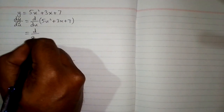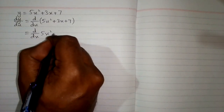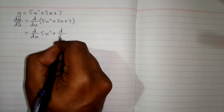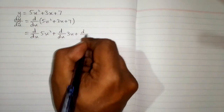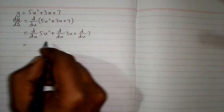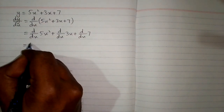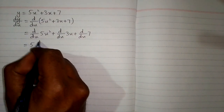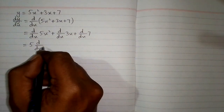So we have d/dx of 5x squared plus d/dx of 3x plus d/dx of 7. Now the coefficient of x squared can be written before d/dx, so we will write 5 times d/dx of x squared.